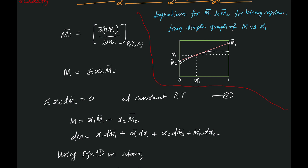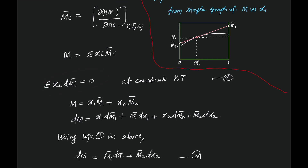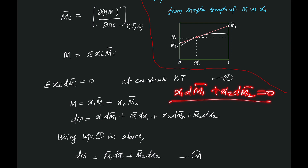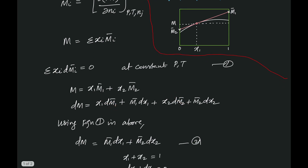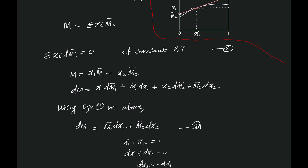We take the differential of m. We have two variables x₁ and m̄₁, so applying the product rule — d(uv) = u dv + v du — to both terms x₁m̄₁ and x₂m̄₂. Using the Gibbs-Duhem equation for the binary system, x₁ dm̄₁ + x₂ dm̄₂ = 0, those cross terms cancel, giving us dm = m̄₁ dx₁ + m̄₂ dx₂.